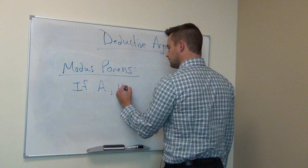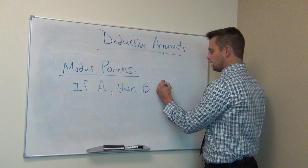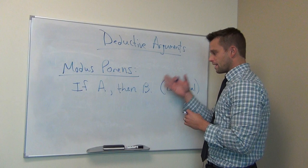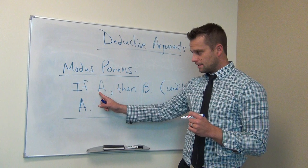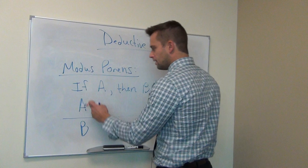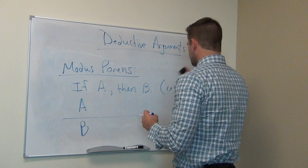This example is called modus ponens, which means 'way of affirmation.' It goes like this: if A, then B. One of the premises says 'if A, then B' — an if-then statement in logic is called a conditional statement, also called a hypothetical. Then a second premise affirms A. So if A is the case, then B is the case; A is the case — what is the logically valid conclusion? Correct: it is B. A is satisfied, therefore B must be the case.